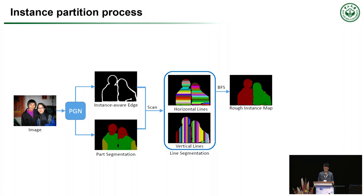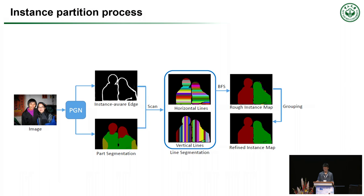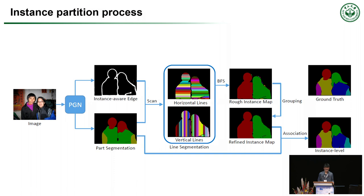However, this simple process may introduce errors if there are falsely predicted edge points inside an instance, resulting in many small regions around instance boundaries. We further designed a grouping algorithm to handle this issue. If a region contains several segmented part labels and covers a large area, it must be a valid person region. On the contrary, if a region is small and only contains one part segmentation label, we judge it as a wrongly separated region and merge it to its neighboring region. By associating the person instance maps and the part segmentation map, we obtain the instance-level human parsing results.